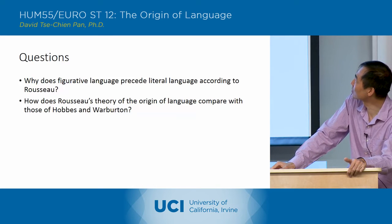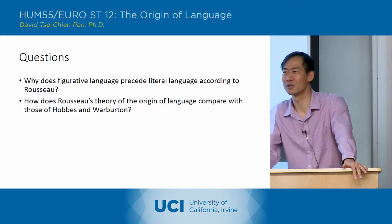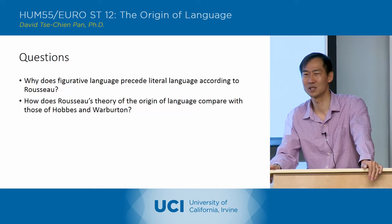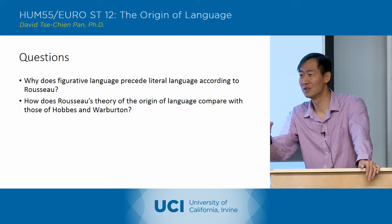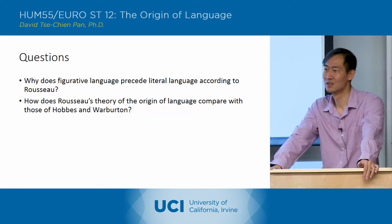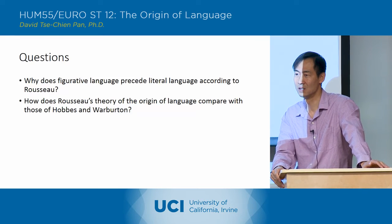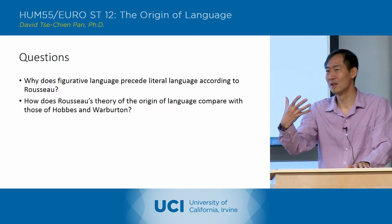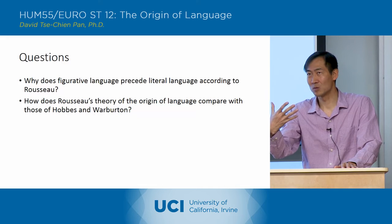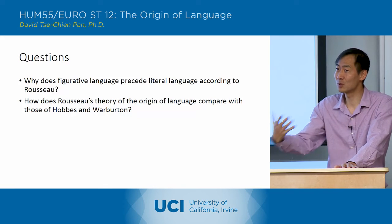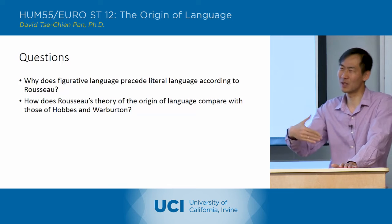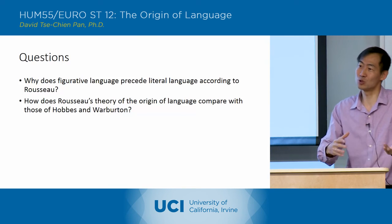So how does Rousseau's theory of the origin of language compare with those of Hobbes and Warburton? Can you summarize that again? Lauren: Rousseau's theory is a mixture of Hobbes and Warburton, because Warburton is more of the figurative side, and Hobbes is the literal side, and Rousseau combines both with his own. Okay, great. So Warburton has the figurative side — he talks about language as figurative. Hobbes talks about literal language and correct definitions, and Rousseau's using both.